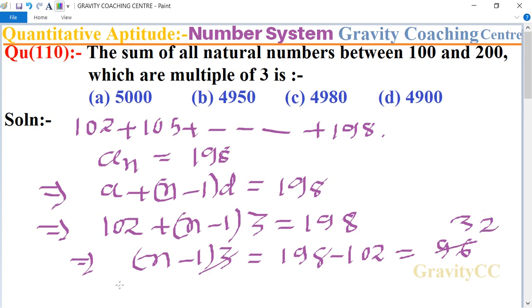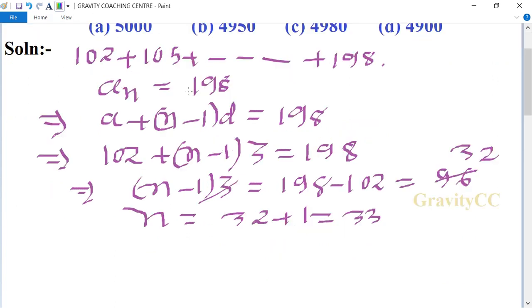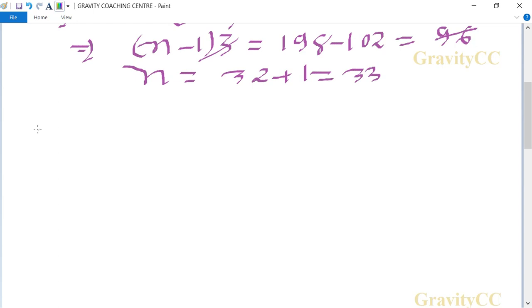So n equals 32 plus 1 equals 33. To find the sum of all natural numbers, the formula S_n equals (n upon 2) times (a plus last term).